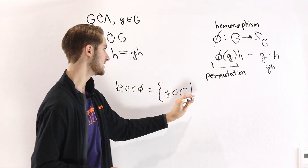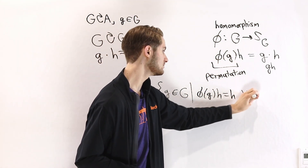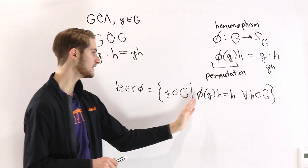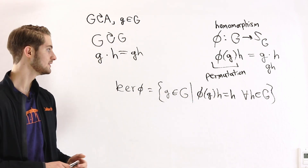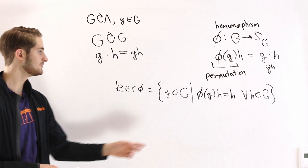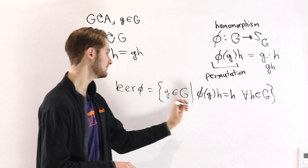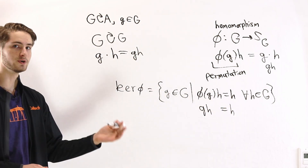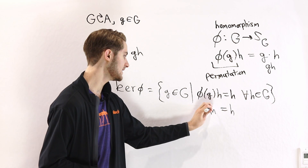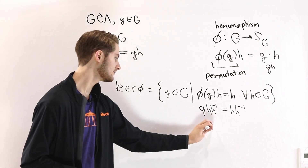In the case of this φ, the kernel is the set of elements g in the group such that the permutation φ(g)(h) gives us the exact same element h back, and this has to be true for every h in the group. This is saying that applying φ(g) leaves every element in the same place, so it is the identity permutation. So what does it mean to have φ(g)(h) = h? By definition φ(g)(h) = gh, so we want gh = h. This is multiplication inside the group G, so we can multiply on the right by h⁻¹ on both sides.